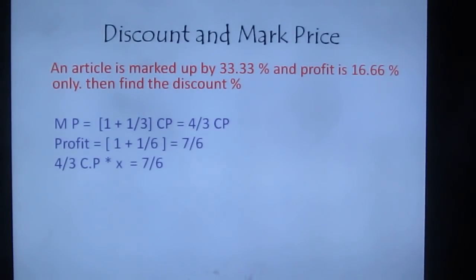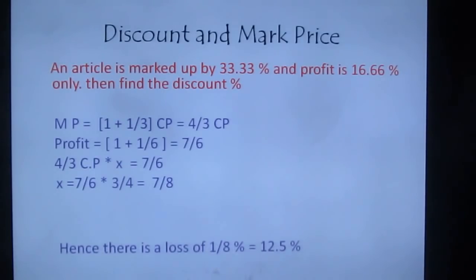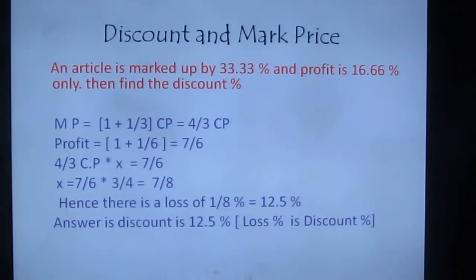MP × discount factor = SP, so (4/3 × CP) × x = 7/6 × CP. Solving: x = (7/6) × (3/4) = 21/24 = 7/8. This means there is a loss of 1/8 = 12.5%. Since loss on marked price is the discount, the discount percentage is 12.5%.